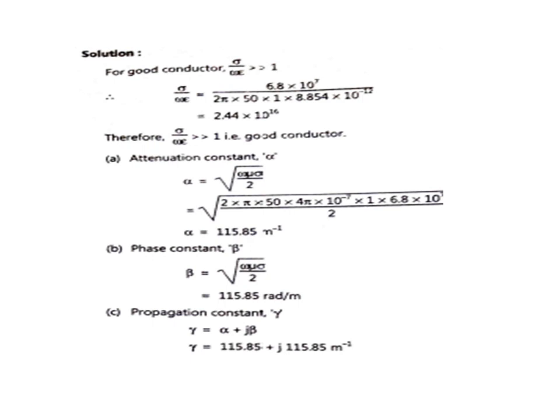We are putting down these values: sigma is given as 6.8 into 10 raised to 7. Omega is 2 pi f, which is 2 pi times 50 Hz. Epsilon is 1 into 8.85 into 10 raised to minus 12. Solving this gives 2.44 into 10 raised to 16, which is very much greater than 1 — confirming this is a good conductor.